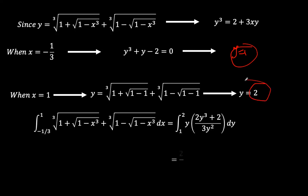And so our integration now becomes the integration from y equals 1 to y equals 2 of y, which comes in place of this complicated expression, times dx. Now here we found dx to be 2y cubed plus 2 over 3y squared. And we see that this y cancels with that,